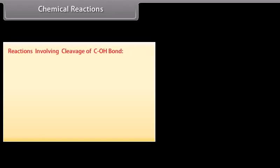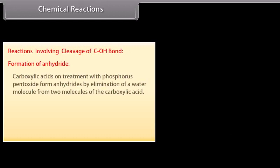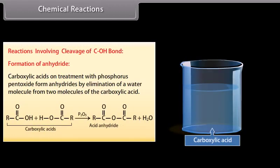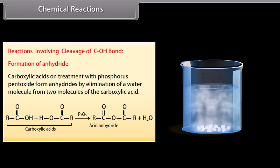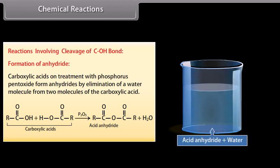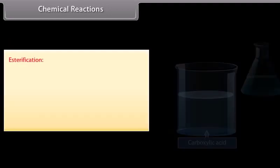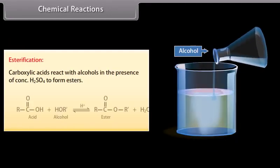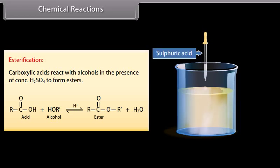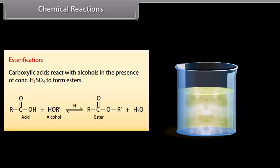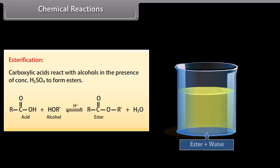Reactions involving cleavage of the C-OH bond. Formation of anhydride: carboxylic acids on treatment with phosphorus pentoxide form anhydrides by elimination of a water molecule from two molecules of the carboxylic acid. Esterification: carboxylic acids react with alcohols in the presence of concentrated sulfuric acid to form esters.